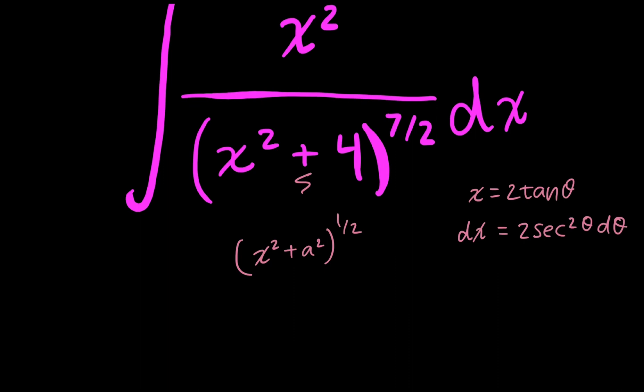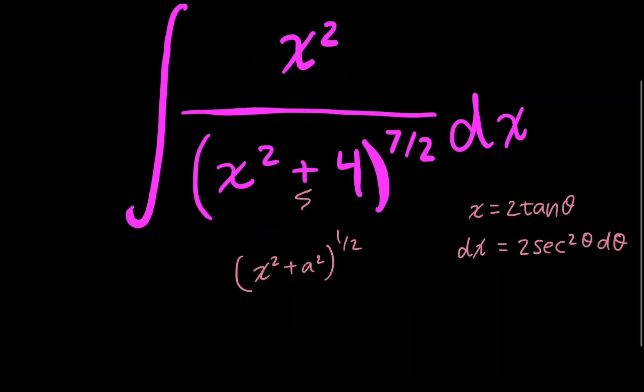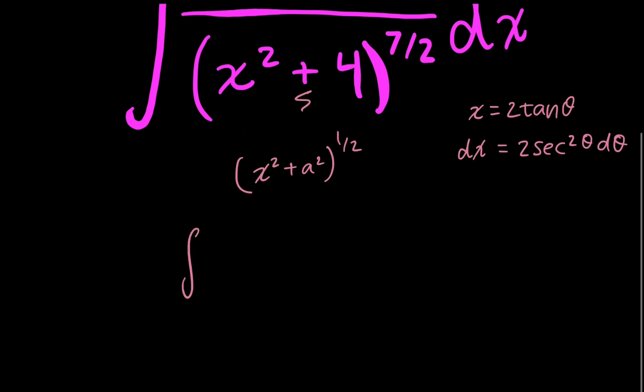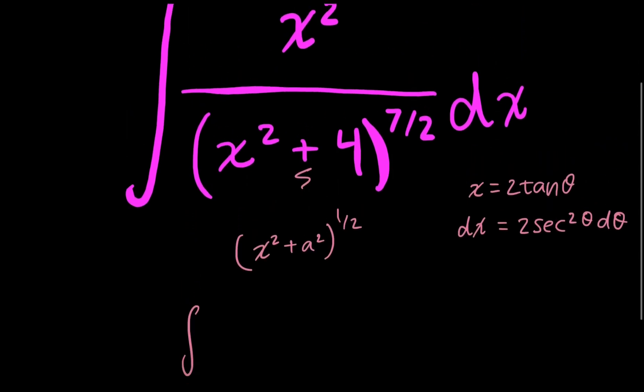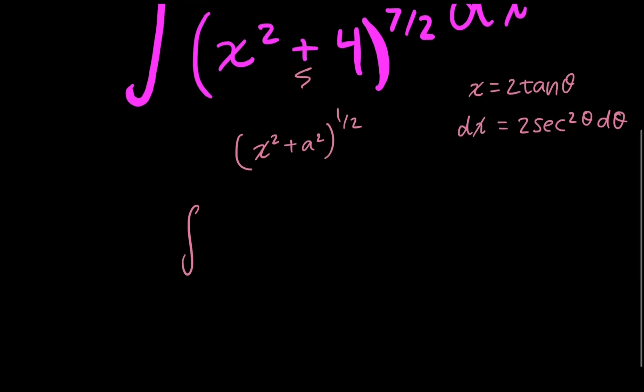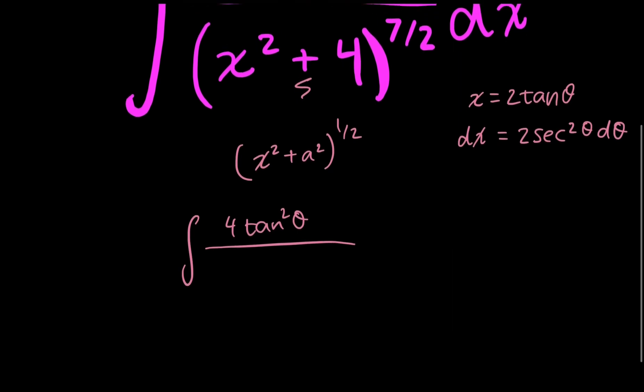So I'm using tan substitution so that when I rewrite my integral, let's rewrite everything in terms of what I just defined. So with respect to theta, I have x squared on top, so I'm going to have 4 tan squared theta,